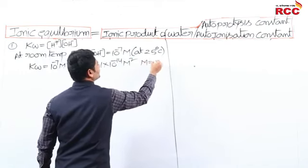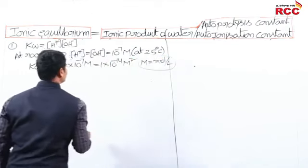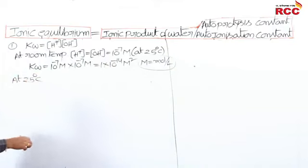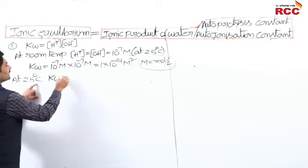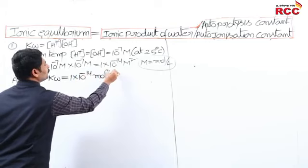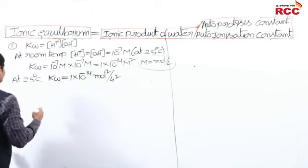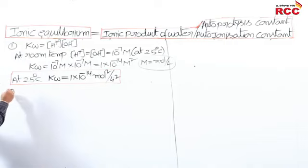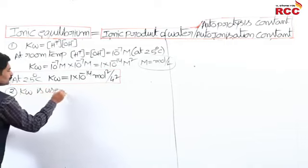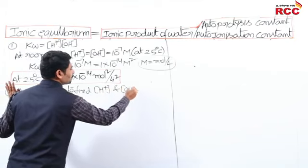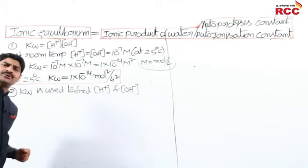You know molarity has units of mol/L, so Kw = 1×10⁻¹⁴ mol²/L² at 25°C. You must remember this value by heart. Second use: Kw is used to find the concentration of H⁺ ions or OH⁻ ions.